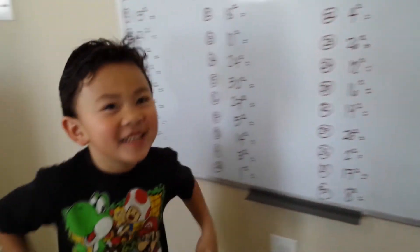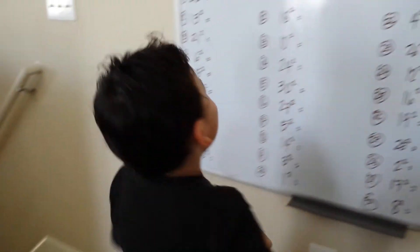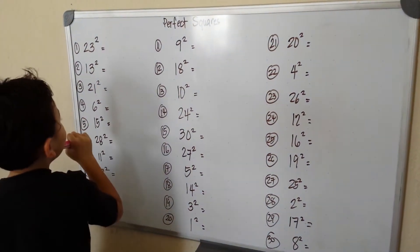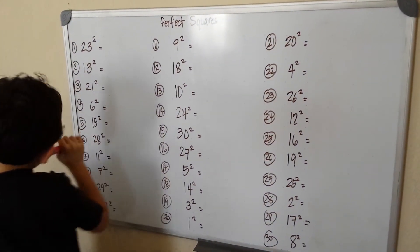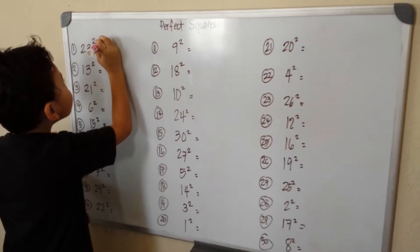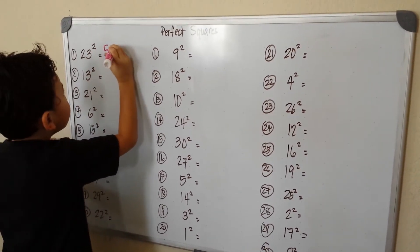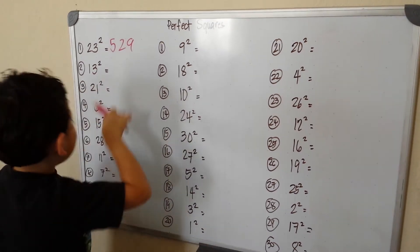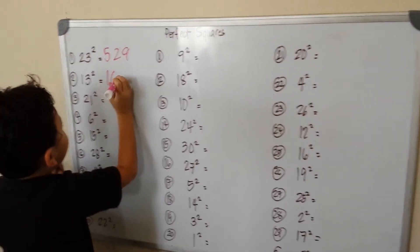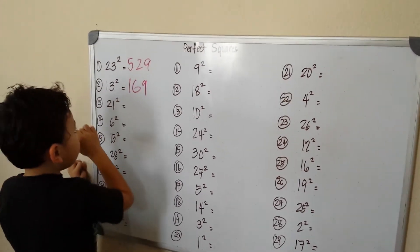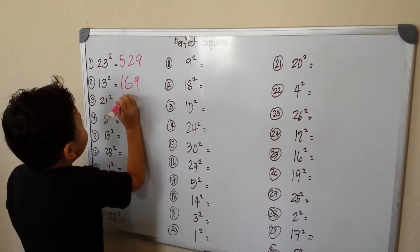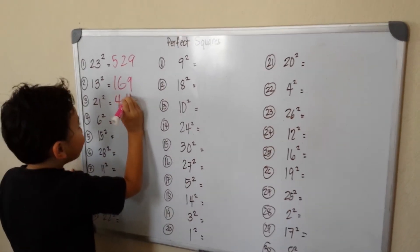Hello, my name is Miguel and today I'm going to do feedback squares. Okay, so 23 squared — I just think — it's 529. Okay, so 14 squared is 169. Okay, 21 squared, which is 441.